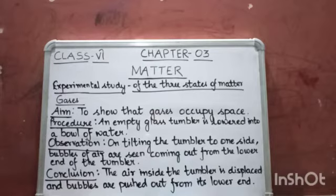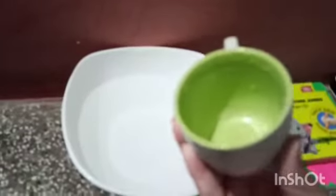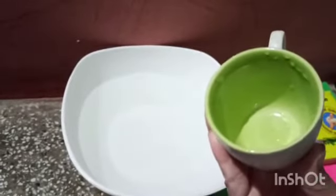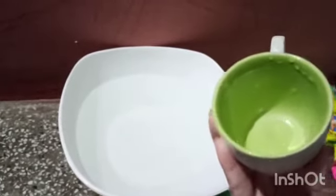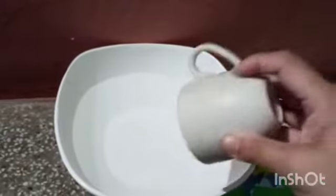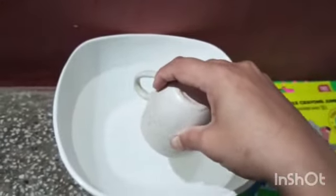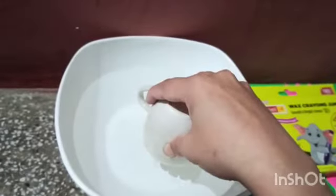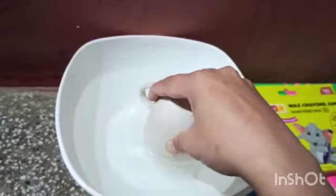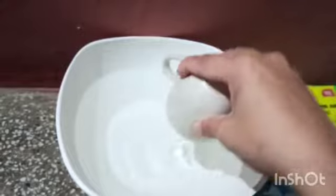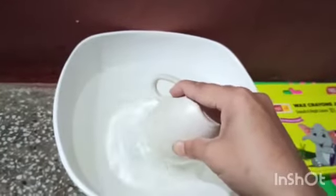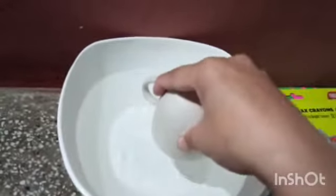Now I'll show you this through an experiment. Students, this is a bowl of water, and instead of a tumbler, I've taken this mini cup. As you can see, this cup is empty. And if I lower this cup inside the bowl of water and place it here and tilt the cup — then can you see this? The bubbles are formed.